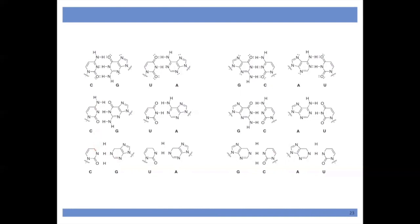If cytosine has the amine up here, then uracil must have the C=O. If guanine has a C=O up here, then adenine must have the nitrogen up there — its opposite partner. This is a way to practice drawing out these structures correctly.